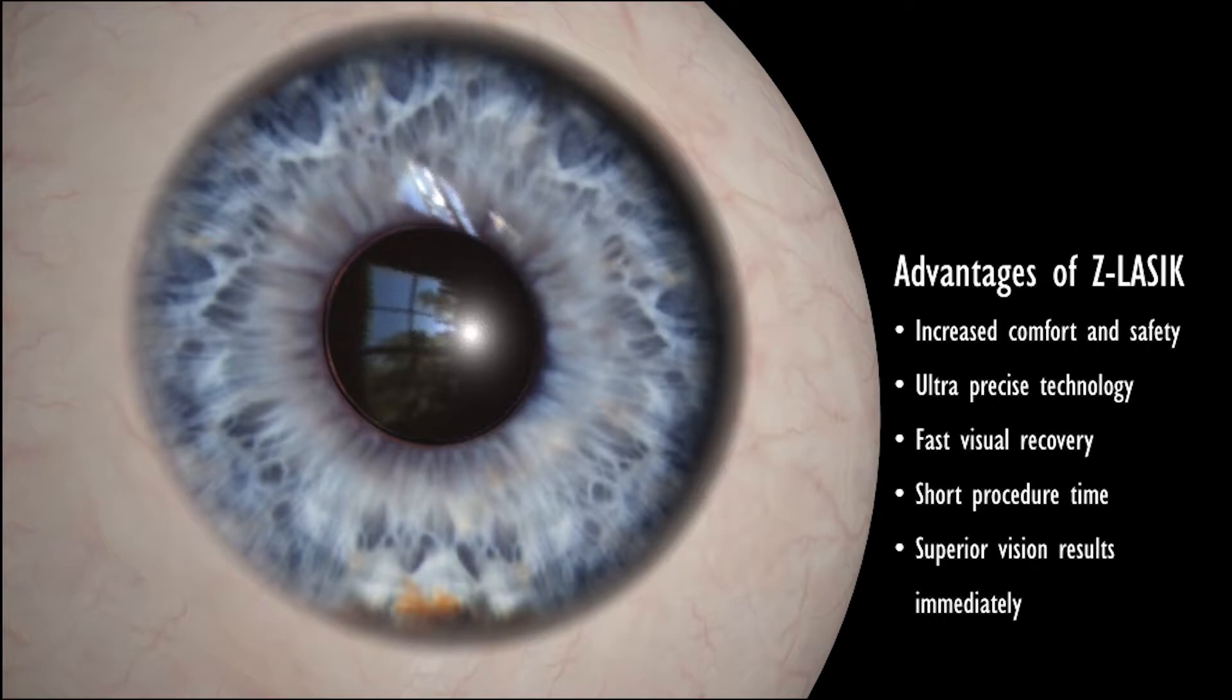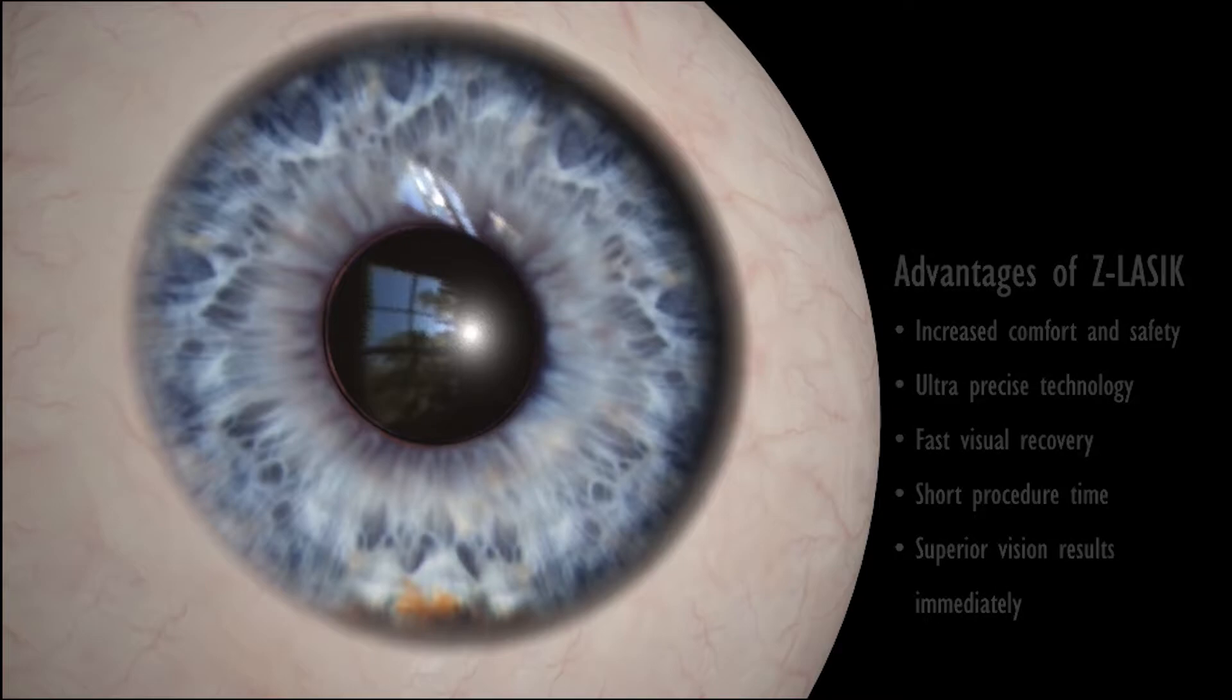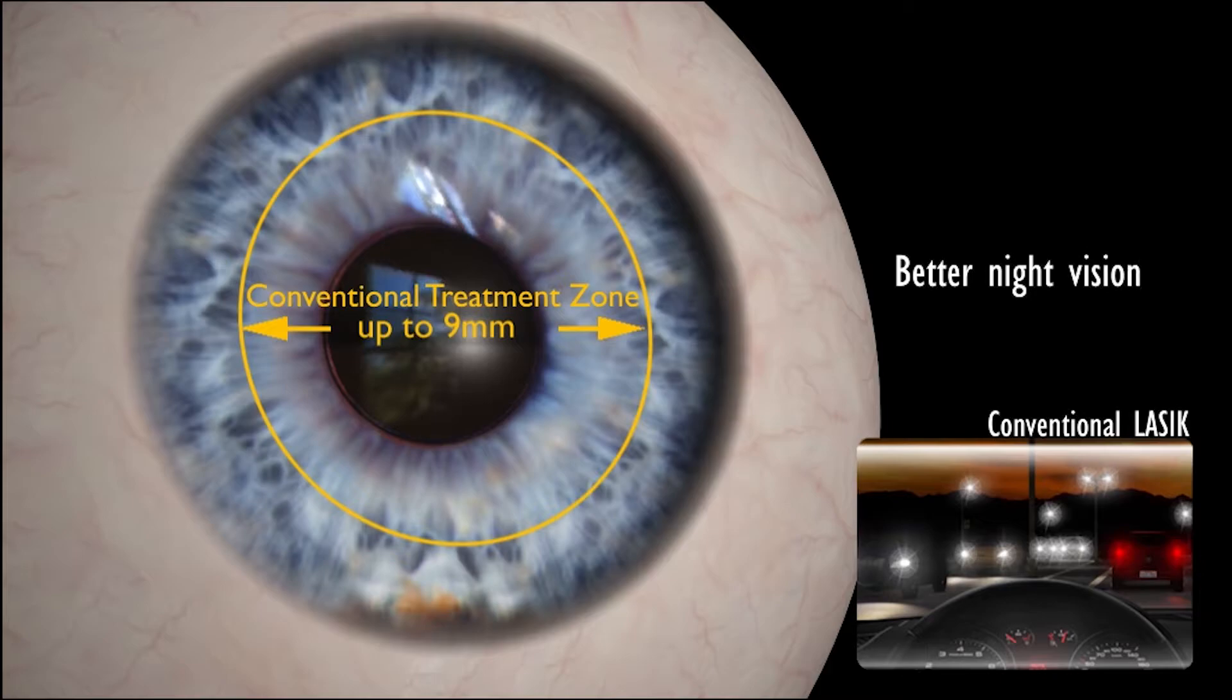The procedure takes only a few minutes and most patients notice dramatic improvement of their vision immediately. With Z LASIK, your surgeon can apply the vision correction to a larger area on the cornea.